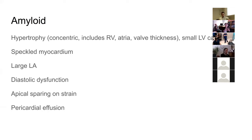On strain you get a little red area in the middle representing apical sparing of contractile dysfunction. The rest of the heart is struggling but the apex is preserved. Sometimes you might also get a pericardial effusion.